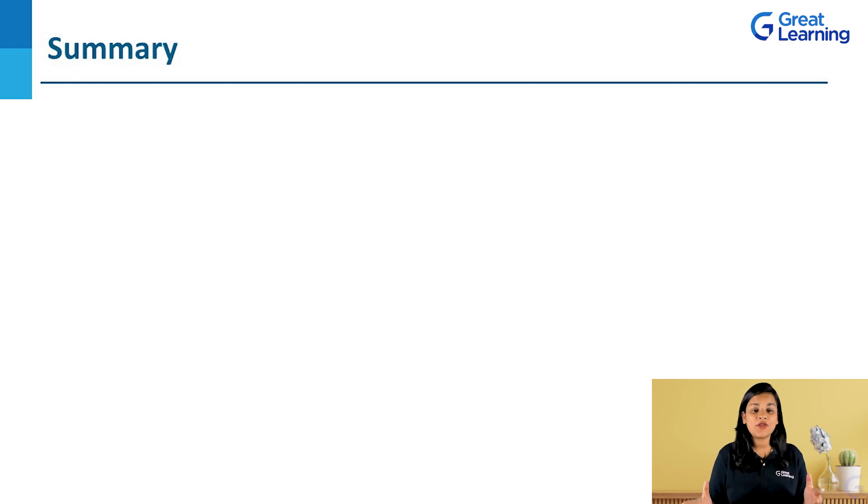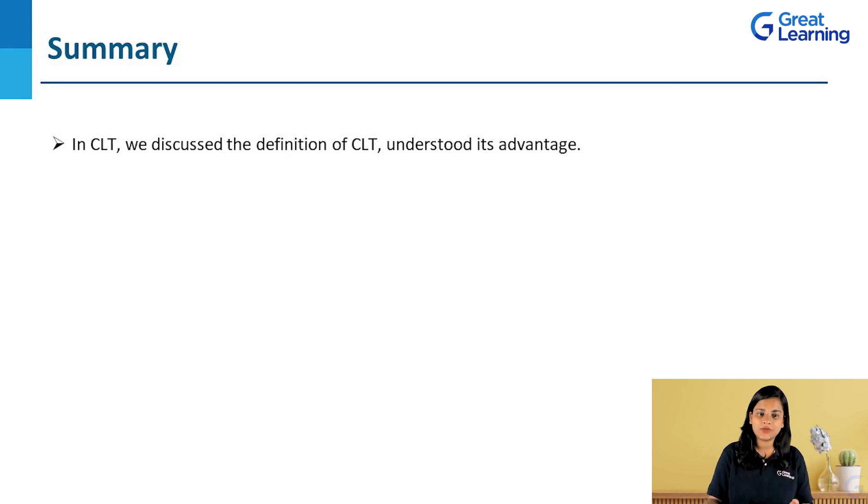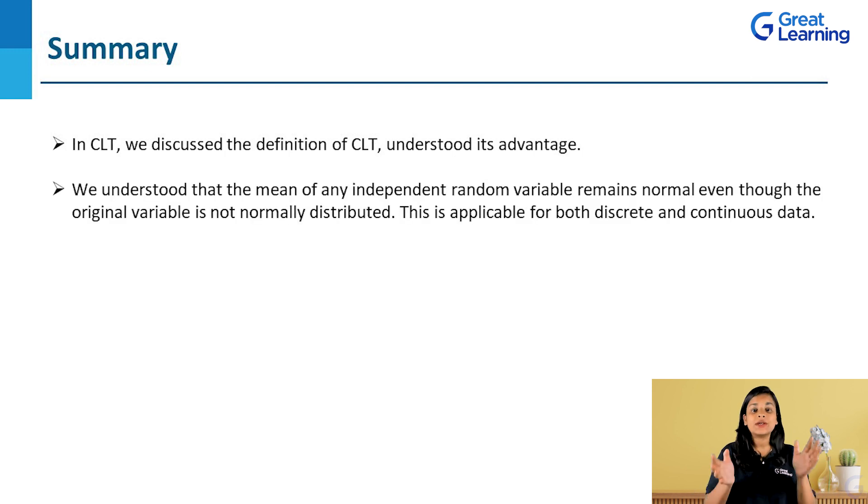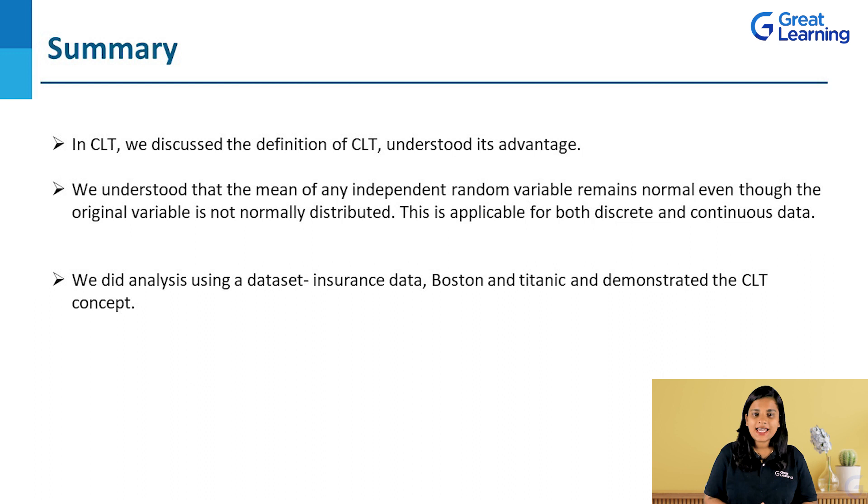Now, very quickly, let's summarize today's video. In today's video, we discussed the definition of CLT, understood its advantage. We understood that the mean of any independent random variable remains normal, even though the original variable is not normally distributed. This is applicable for both discrete and continuous data. We did analyze using a data set, insurance data, Boston and Titanic, and demonstrated the CLT concept.